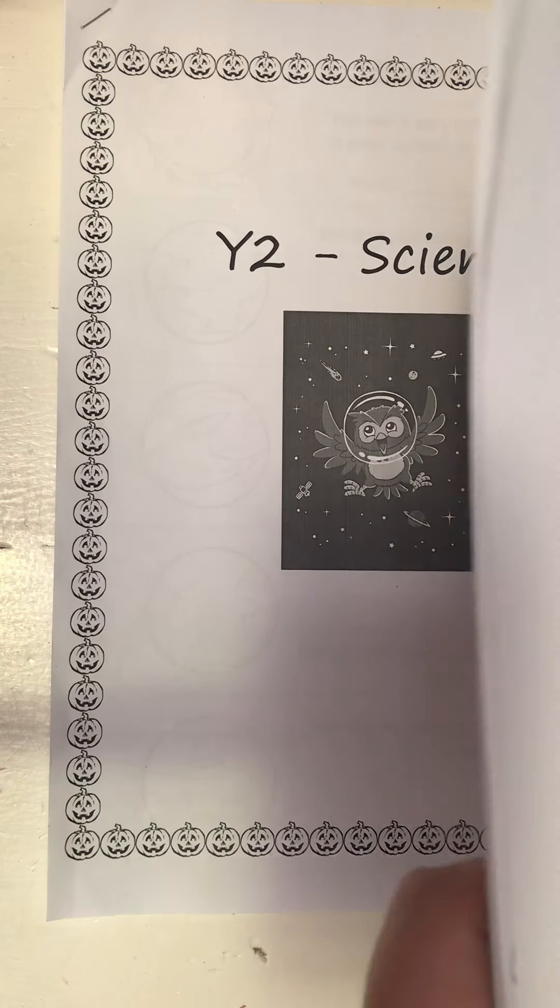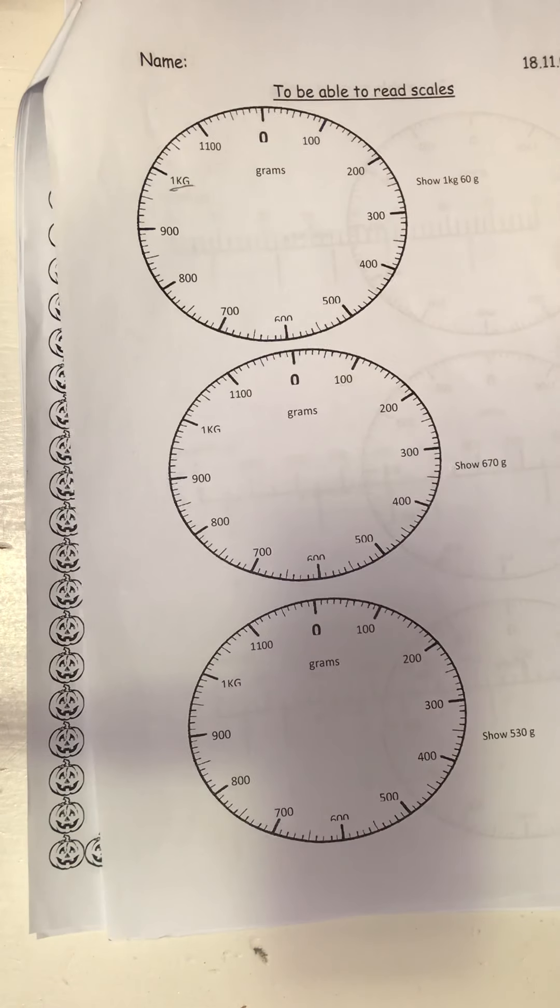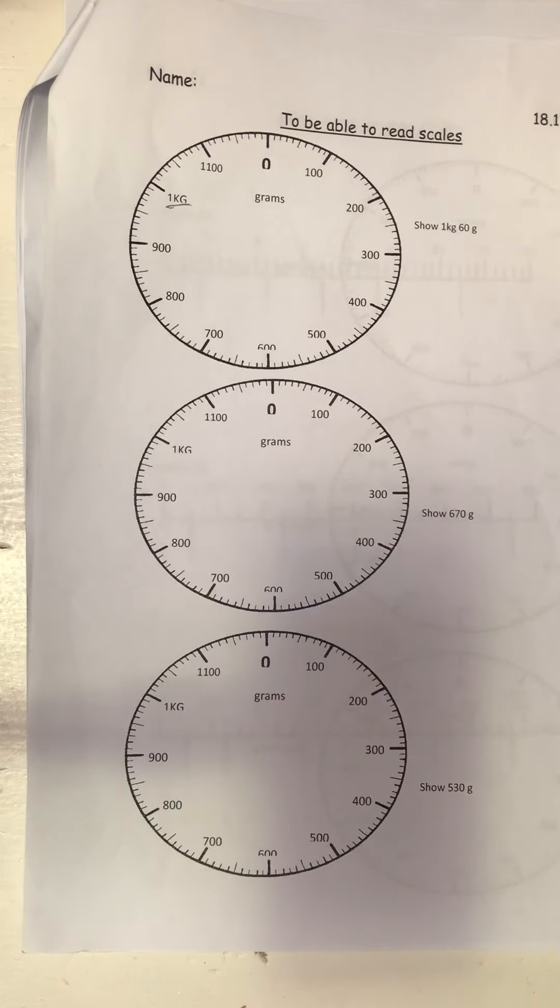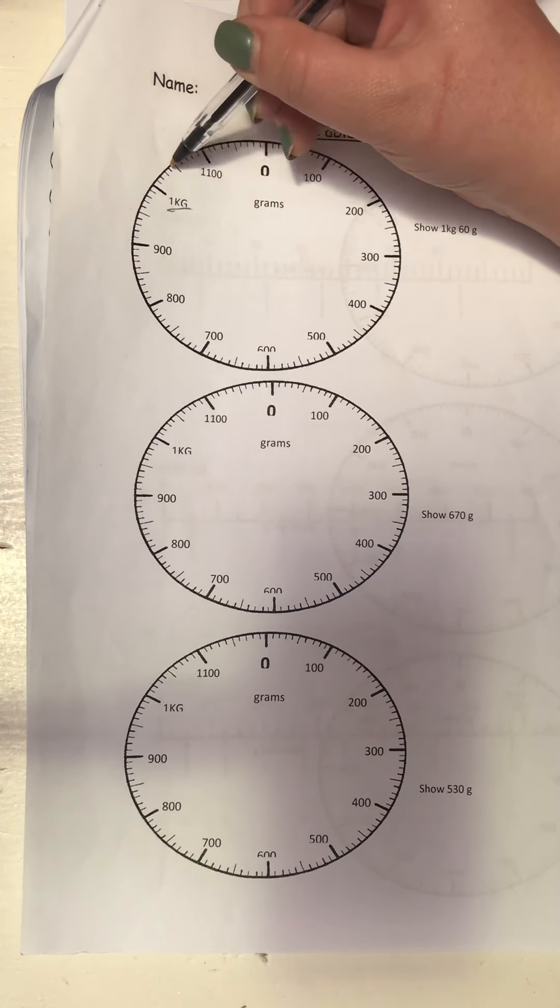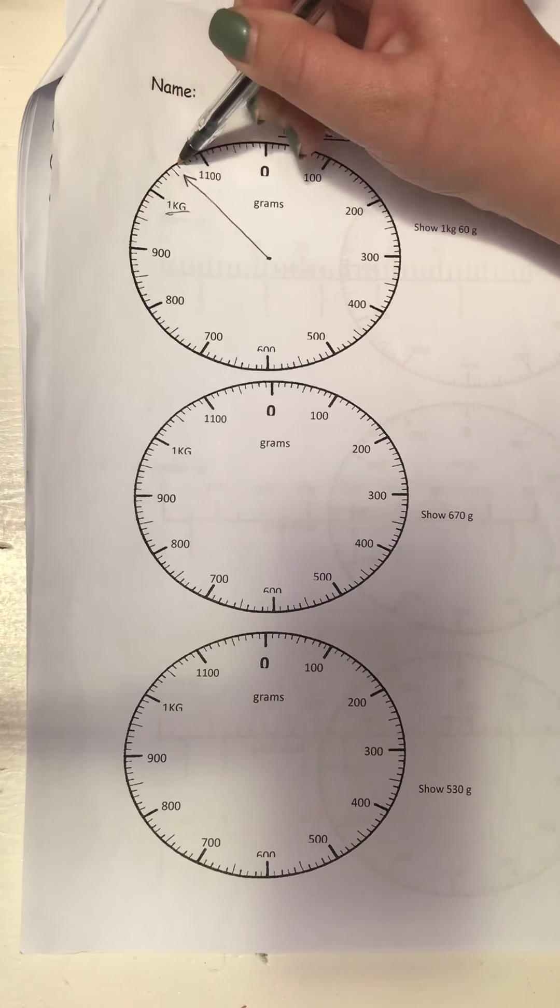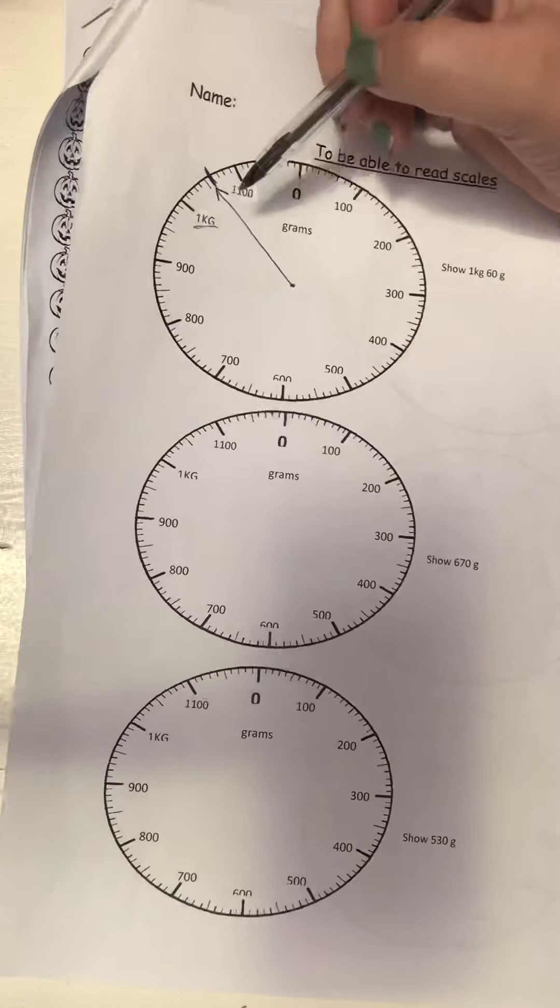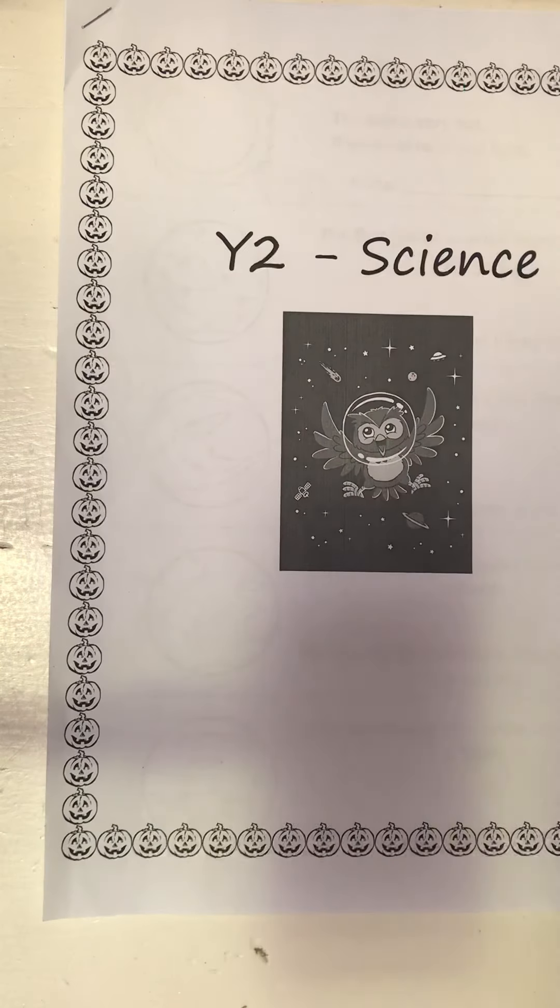Let's do the next one. On this page you will have to draw the arrow. So they say show 1 kilogram and 60 grams. Luckily they give you 1 kilogram and 60 grams. Now we know each little line represents 10, so 10, 20, 30, 40, 50, 60. So from the middle to that one will give me 1 kilogram and 60 grams. Go draw the pointers for the other two.